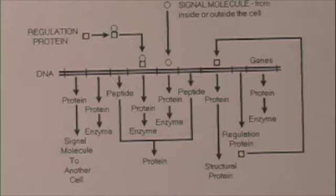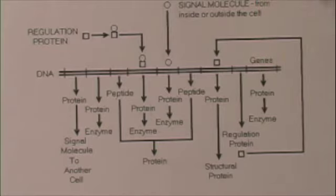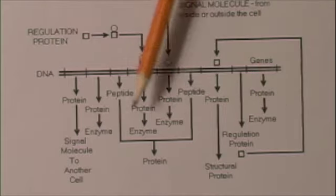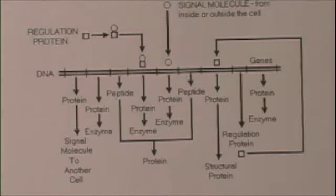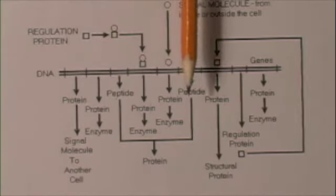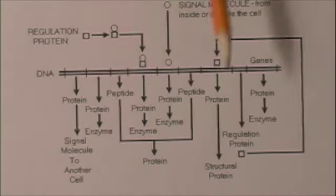The genes make proteins by transcription and translation. A lot of those proteins are enzymes, but a lot of them may be structural proteins. Sometimes the proteins are produced in the form of polypeptides, and these peptides are then linked together to form a protein.